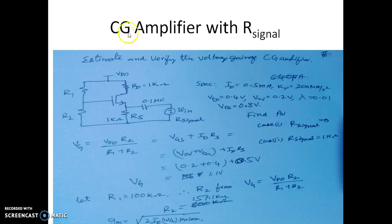Now in this video we shall simulate this CG amplifier with some practical circuit assuming some R signal values: 0, 100 ohm, as well as some different values of R signal. So this is a circuit diagram what we have.